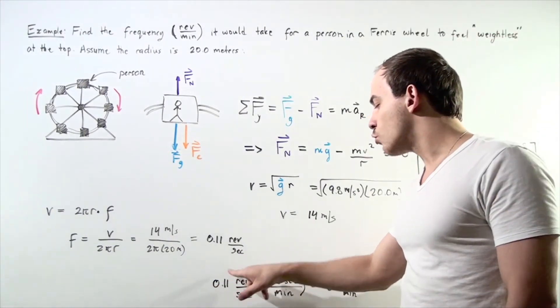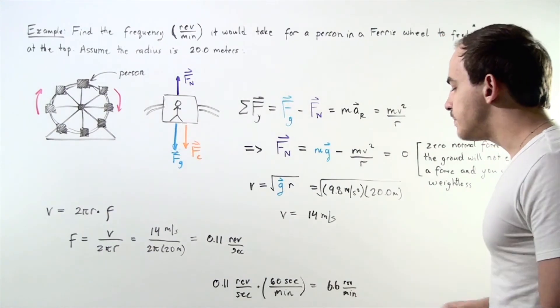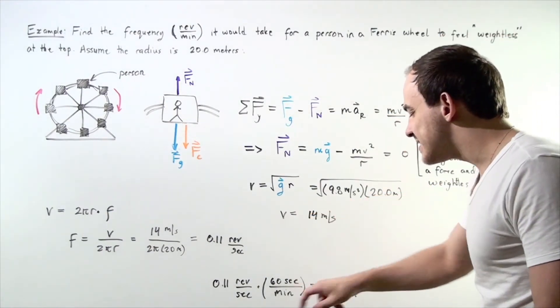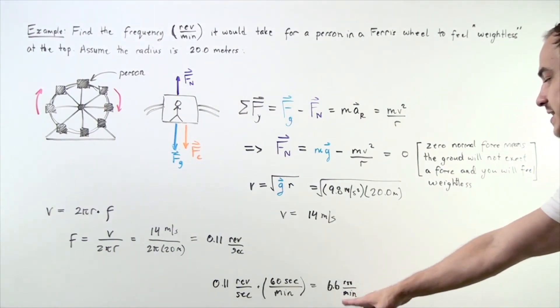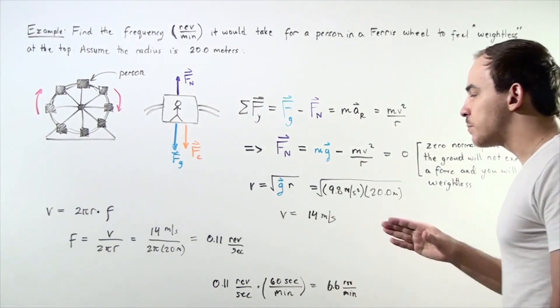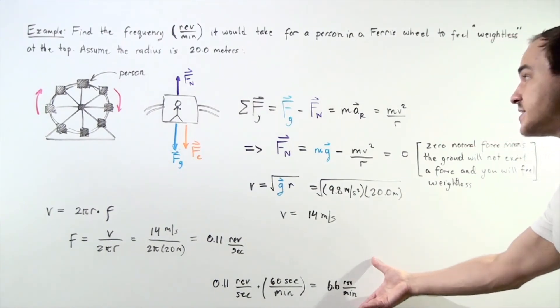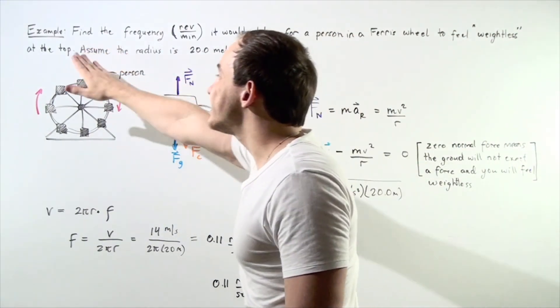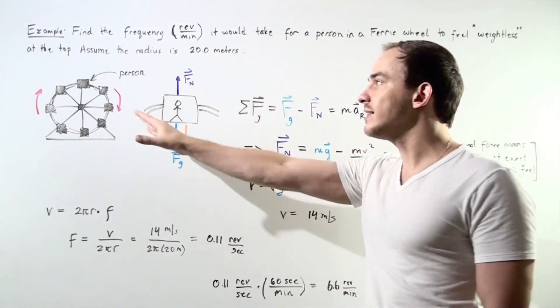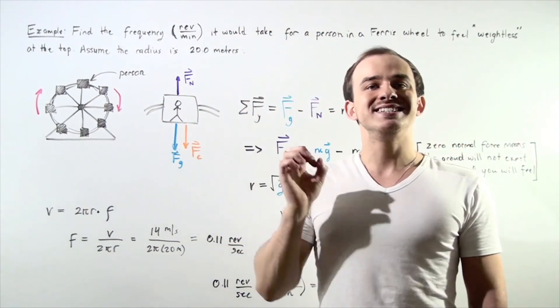So 0.11 revolutions per second multiplied by 60 seconds in a minute. The seconds cancel and we're left with approximately 6.6 revolutions per minute. So our frequency of this much will ensure that our normal force at the top of our Ferris wheel, at the top of the arc, reads zero.